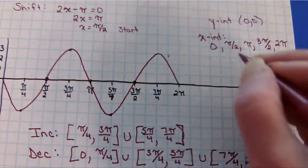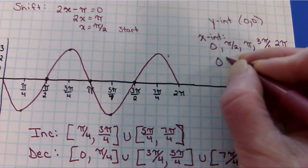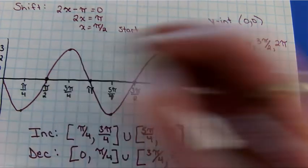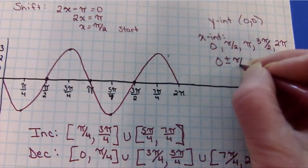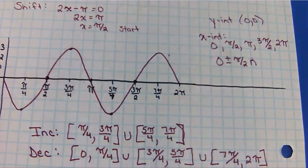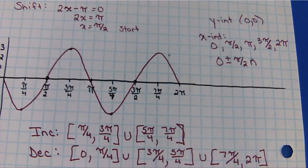Or remember I could do this as 0 plus or minus—how far away is the next one? π/2, and it repeats. So there's two ways I could write the x intercepts. We can also talk about the domain. The domain technically is all real numbers, and the range is from negative 3 to 3.